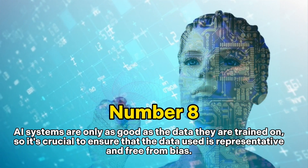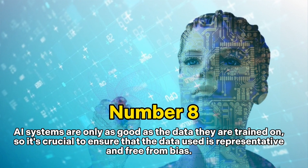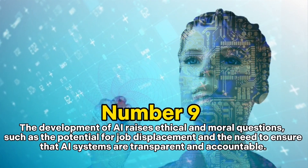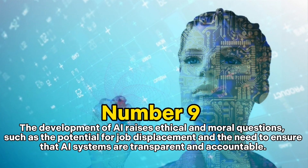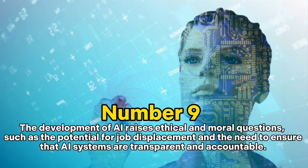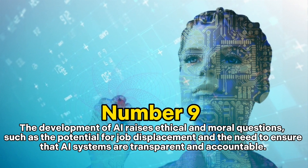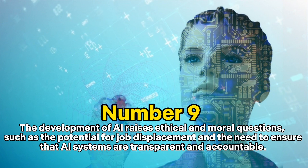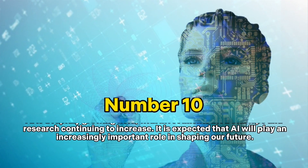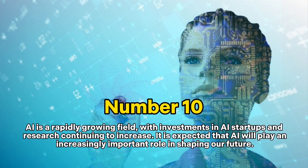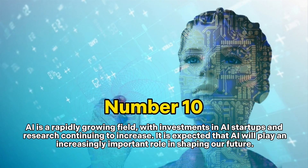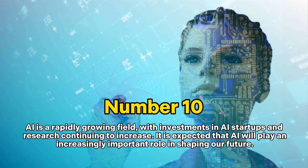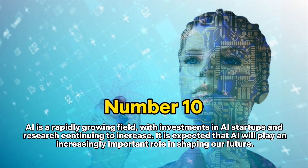Number seven: AI has the potential to revolutionize many areas of our lives, including education, transportation, and even entertainment. Number eight: AI systems are only as good as the data they are trained on, so it's crucial to ensure that the data used is represented positively and free from bias. Number nine: the development of AI raises ethical and moral questions, such as the potential for job displacement and the need to ensure AI systems are transparent and accountable. Number ten: AI is a rapidly growing field, with investments in AI startups and research continuing to increase.